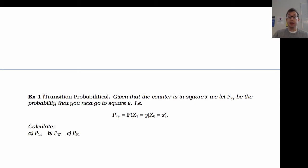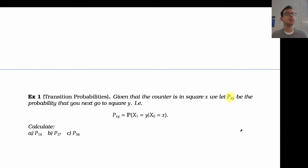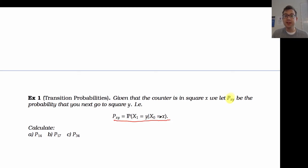There's a notion of a transition probability. Given that the counter is in square x, we let p_xy be the probability that the next square is y - that is, the conditional probability that given I'm in state x, the next state I arrive at is y.